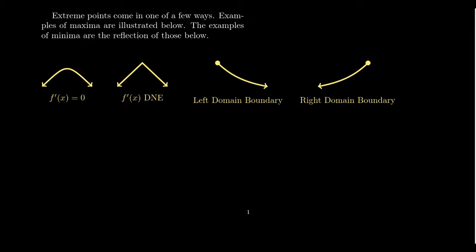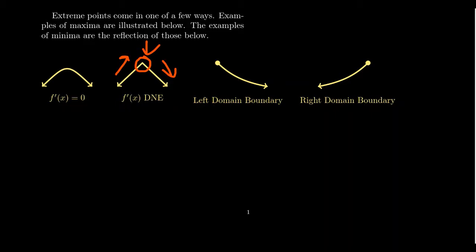Like we saw with the absolute value, you can go from increasing to decreasing — making it a maximum — but without a smooth transition. There's a sharp corner instead, which means the derivative is undefined at that point. So when searching for extrema, we can find them with horizontal tangent lines when the derivative equals zero, or when the derivative is undefined.